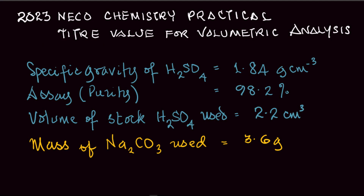The volumetric analysis for this year's NECO Chemistry practical is an acid-base titration between H2SO4 and Na2CO3 — that's sulfuric acid and sodium carbonate. The specific gravity of the acid is 1.84 g/cm³, the purity is 98.2%, and the volume of stock H2SO4 to be diluted is 2.20 cm³. The mass of Na2CO3 to be prepared is 3.60 grams. Note: use the assay and specific gravity values of the acid you are actually working with in your own calculation — this is only a guide.